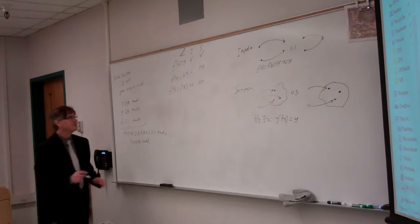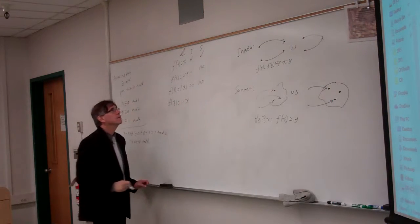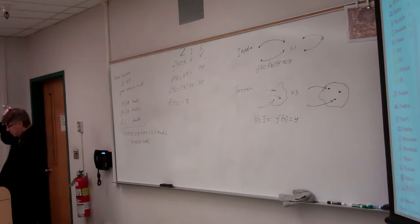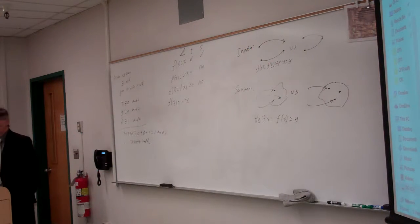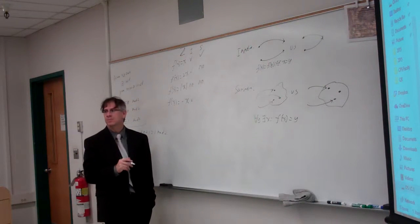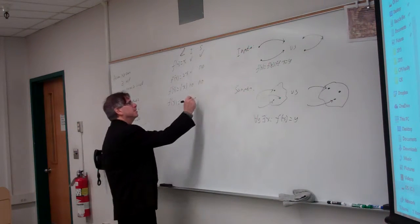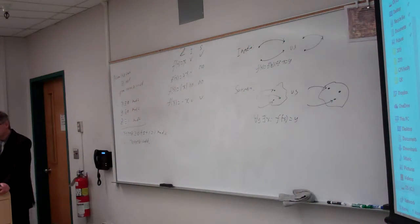All right, f of x equals negative x. Distinct values mapped to distinct values? Yep. And is every integer mapped to by some other integer? Yes. If we want to map to x, we just come from the number negative x. That'll bring us there.